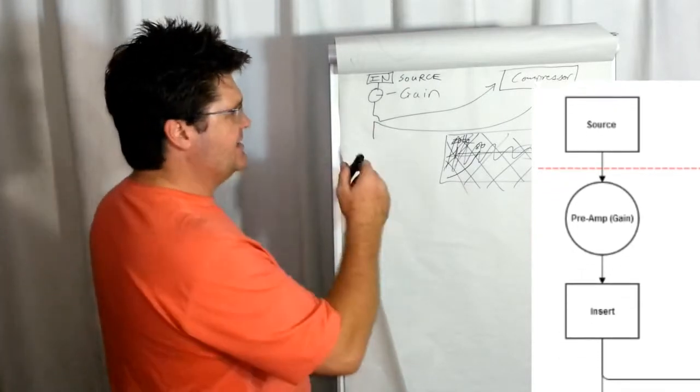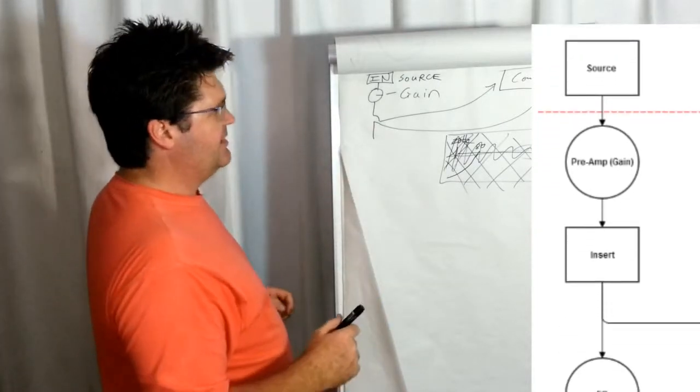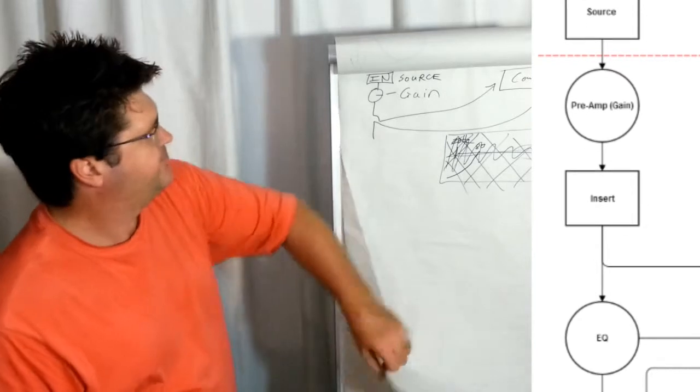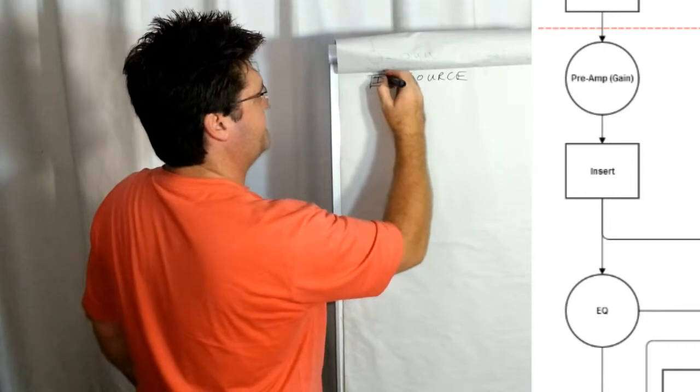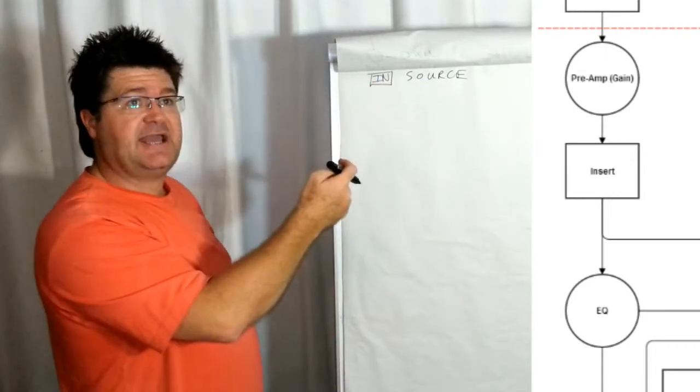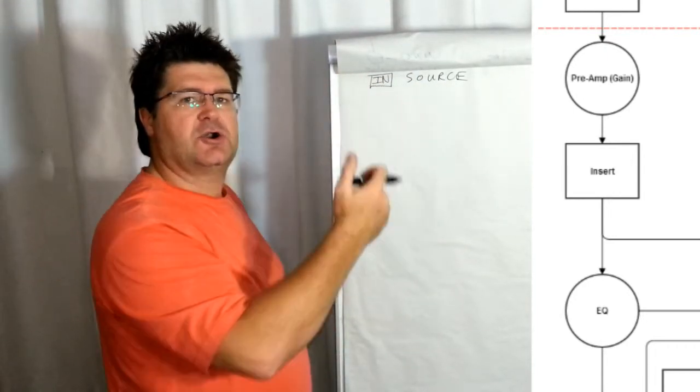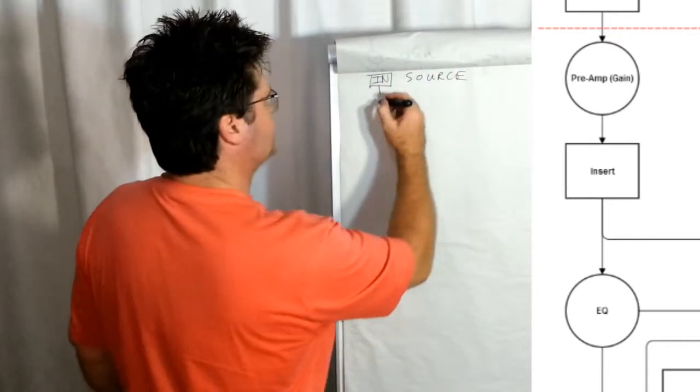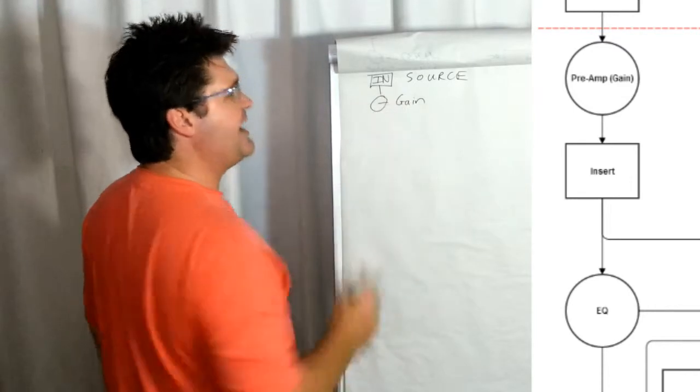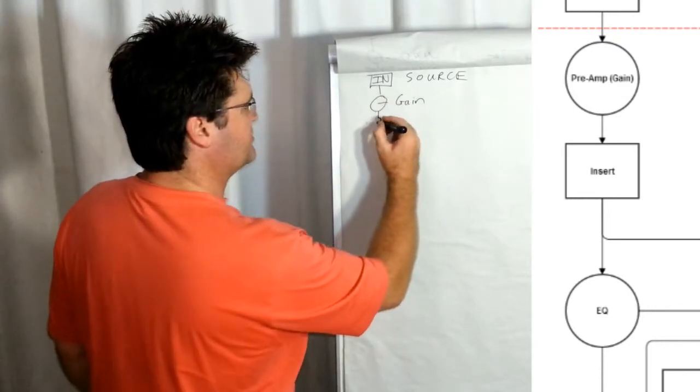From the insert, it has two different routes. I think I'm going to page over source, which can be a jack, a XLR and RCA, where your signal comes into the desk. It goes to gain, which is the preamp. From there, it goes to the insert point.